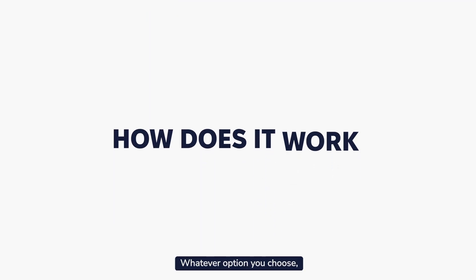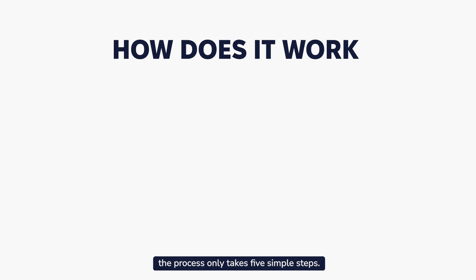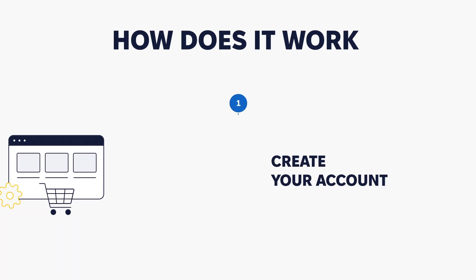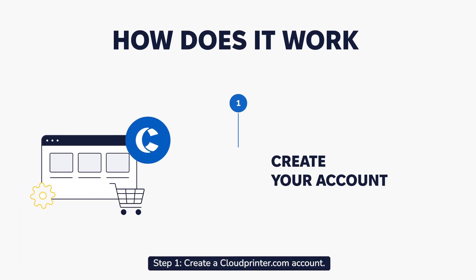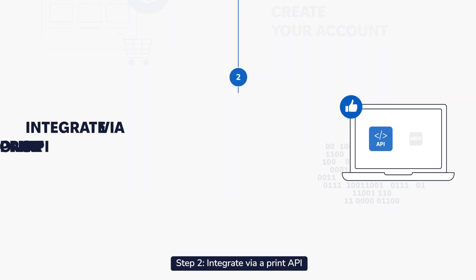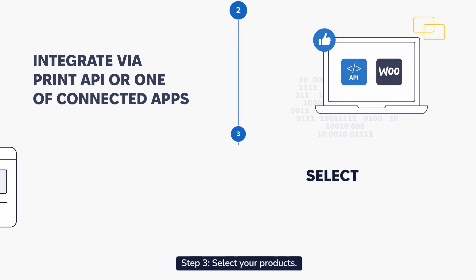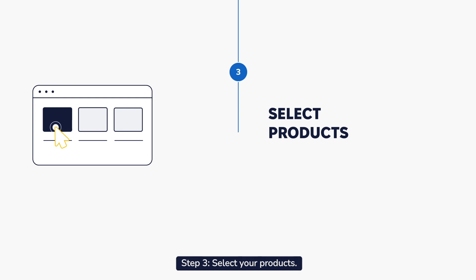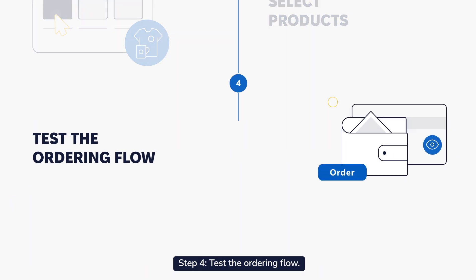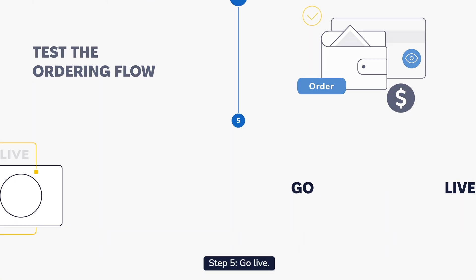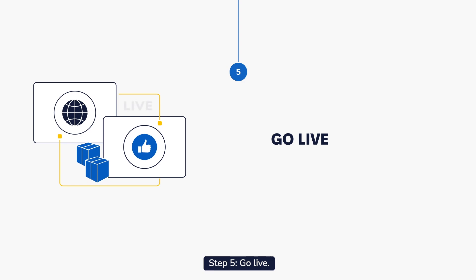Whatever option you choose, the process only takes five simple steps. Step one: create a CloudPrinter.com account. Step two: integrate via print API or one of our connected apps. Step three: select your products. Step four: test the ordering flow. Step five: go live.